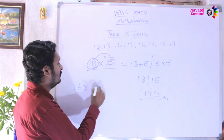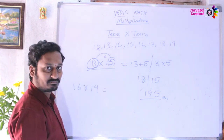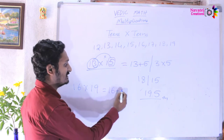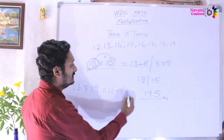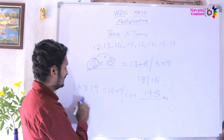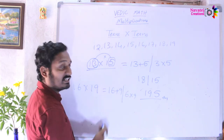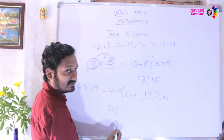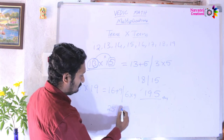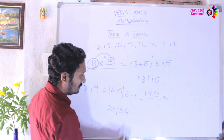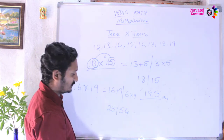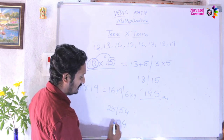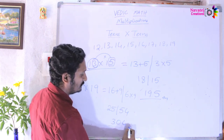Next example: 16 into 19. First take 16 plus the ones-place digit 9, then 6 into 9. So 16 plus 9 is 25, and 6 times 9 is 54. Apply the balancing method — drop ones, carry tens — giving 304 as the answer.